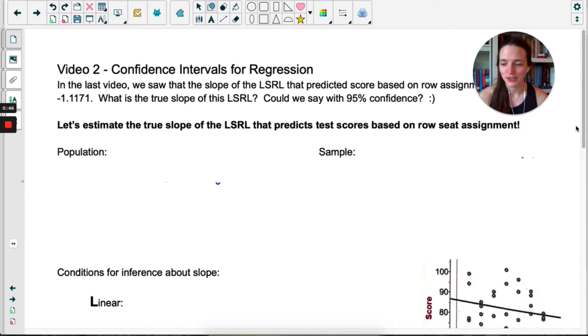You can actually do a confidence interval for any part of the least squares regression line, including the y-intercept, but the y-intercept is usually less interesting because it doesn't make sense in real life. In this example there is no zero row, so there is no real y-intercept.